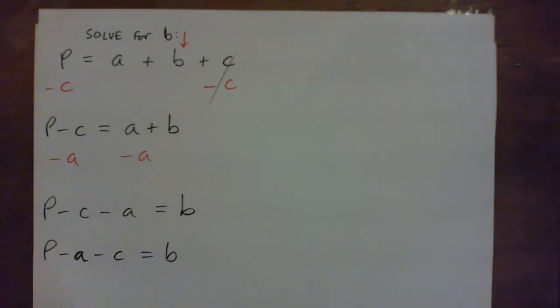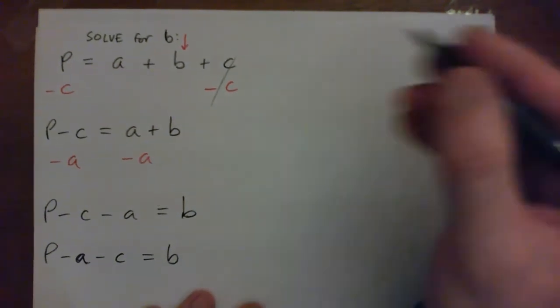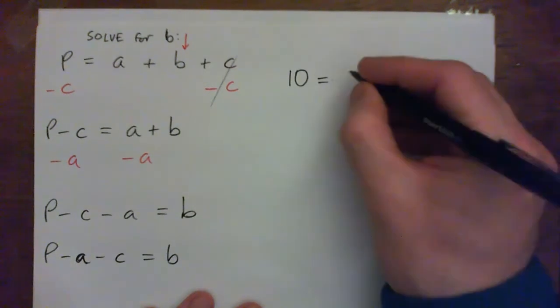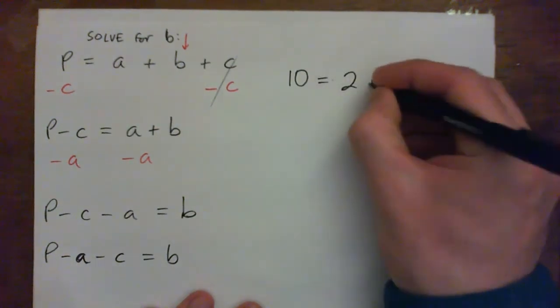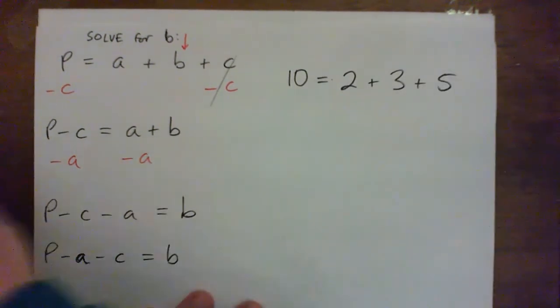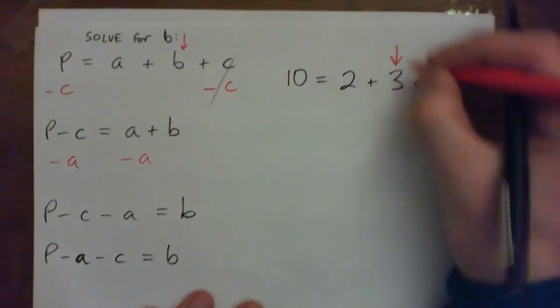And just to further explain this. Imagine P was say the number 10. And instead of P, you had 10. Equals A was 2. B was, let's say, 3. And C was 5. And let's say you want to get the number 3 all by itself.